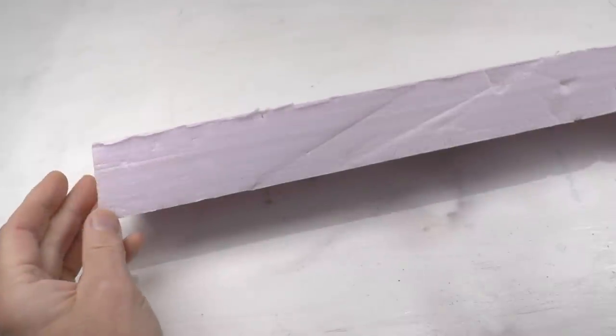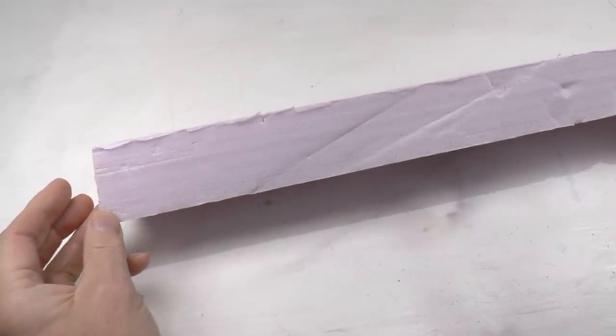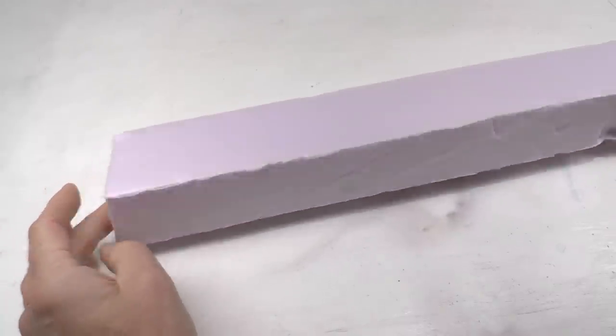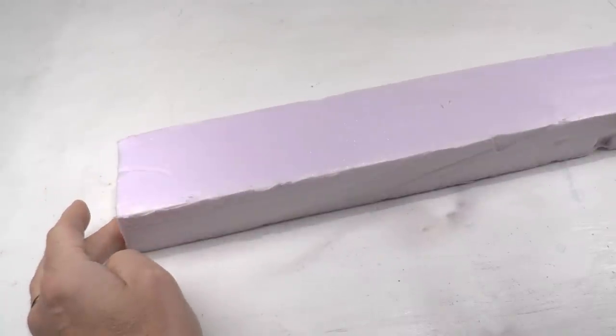The concrete parts in this diorama will be made from styrofoam. This can be bought in your DIY store. This sheet here is two inches thick, which is 50 millimeters.